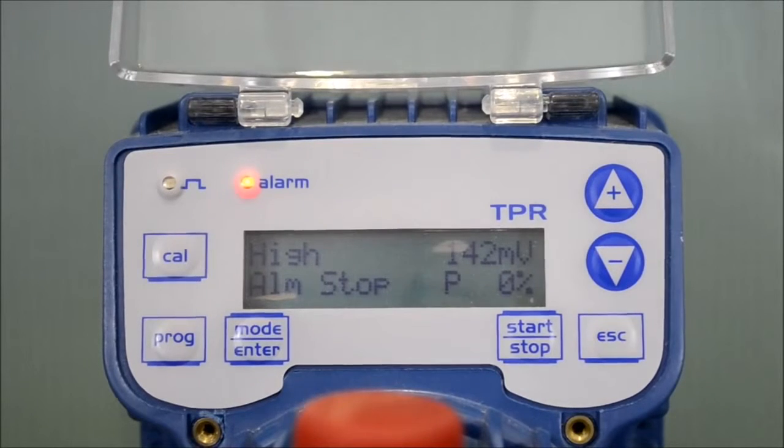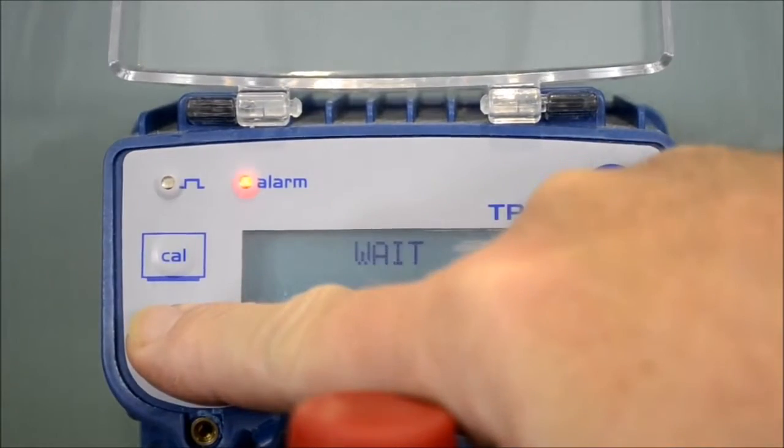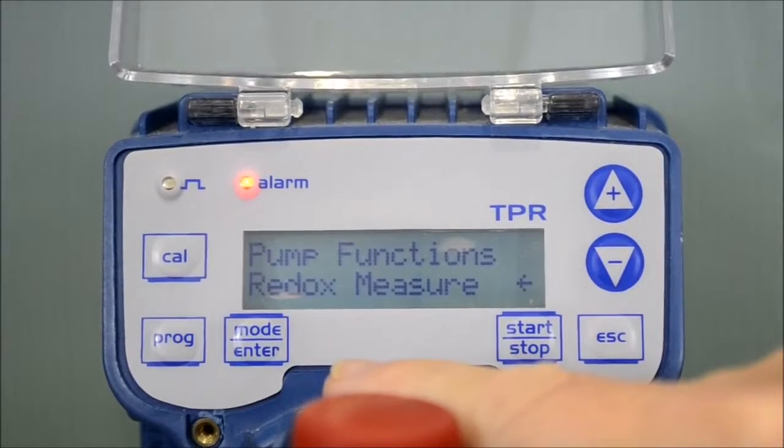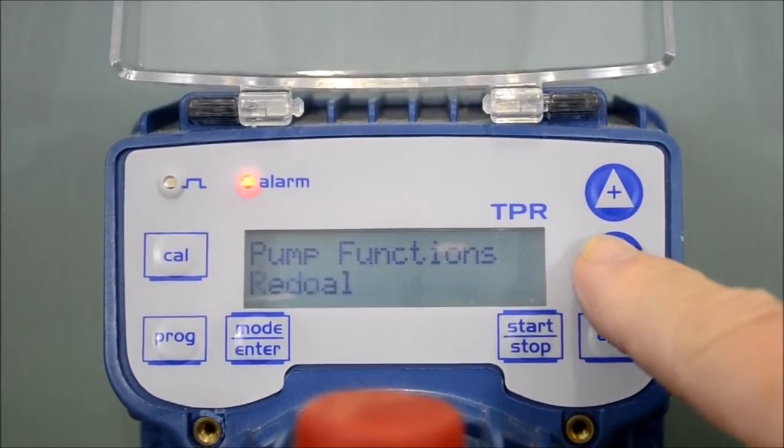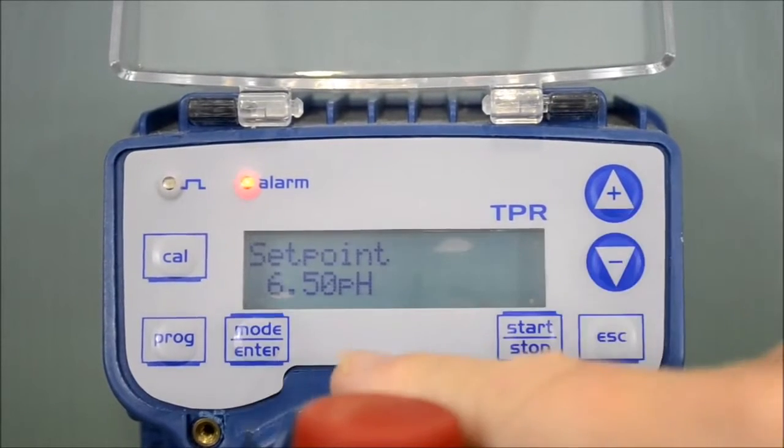If the pump is not currently in the correct operation, press the program button until program configuration is shown. Press enter twice to show the current mode of operation. This can then be changed using the down or up arrow and pressing enter to confirm.